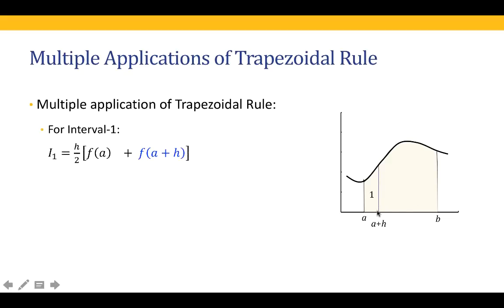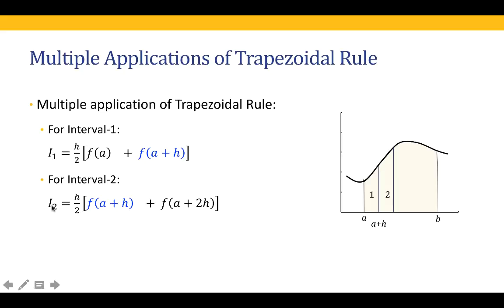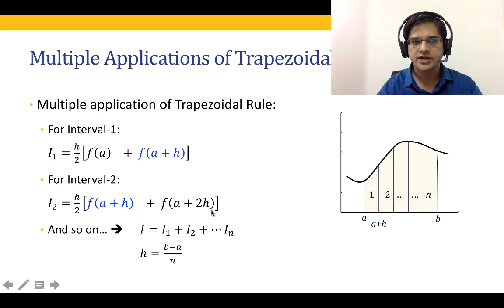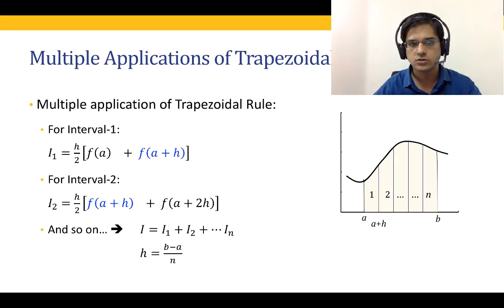For the first interval, between a and a+h, the area using the trapezoidal rule is h/2 multiplied by f(a) plus f(a+h). The second interval goes from a+h to a+2h, and its area is h/2 multiplied by f(a+h) plus f(a+2h). We keep doing that until the last interval. Once we have all these areas, the integral I is the summation of all these individual areas obtained using the trapezoidal rule.